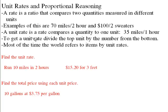A unit rate is a rate that compares a quantity to one unit. Up here we got 70 miles for two hours. That's the same as 35 miles per one hour. So 35 miles per hour, that's how fast you're going. To get a unit rate, just divide the top unit by the number from the bottom.